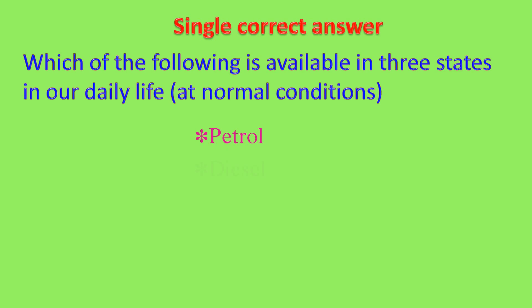Which substance is available in three states? Water is available in three states: ice, water, and water vapor or steam. So the correct answer is water.